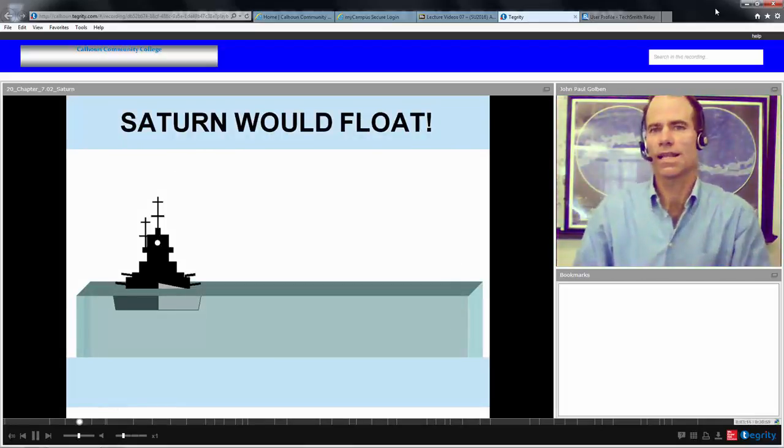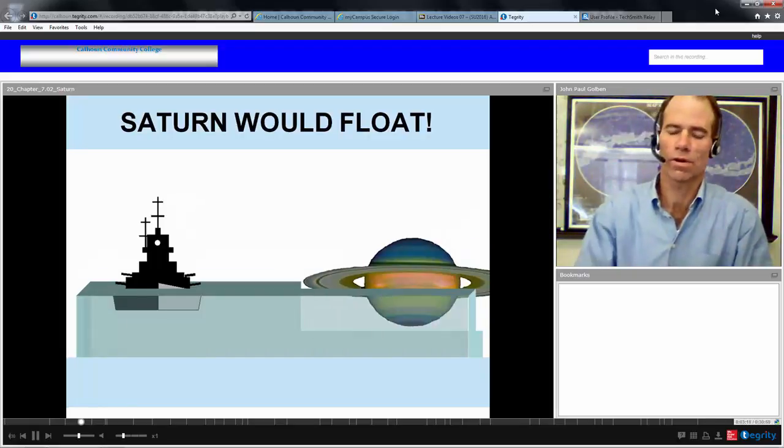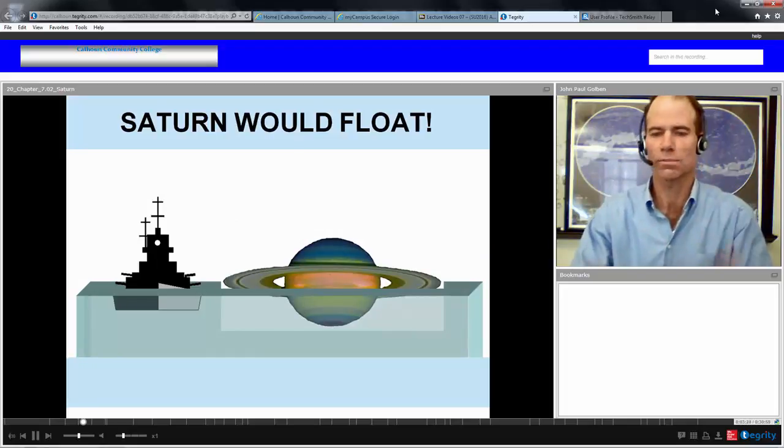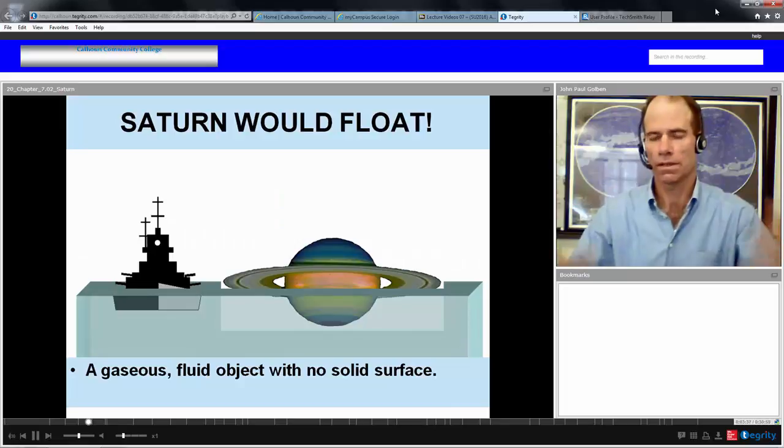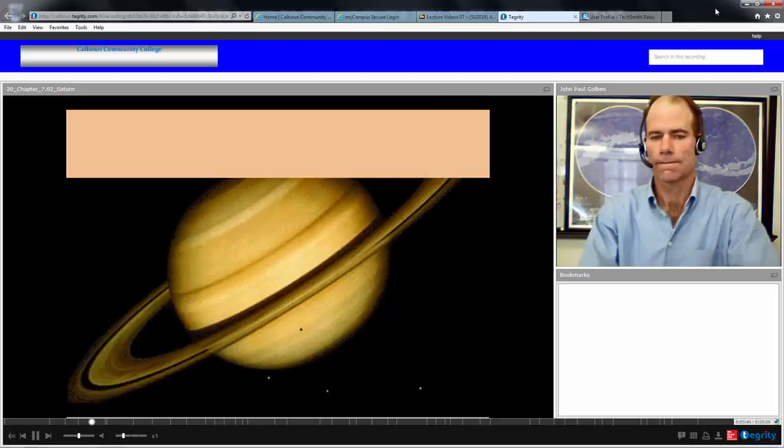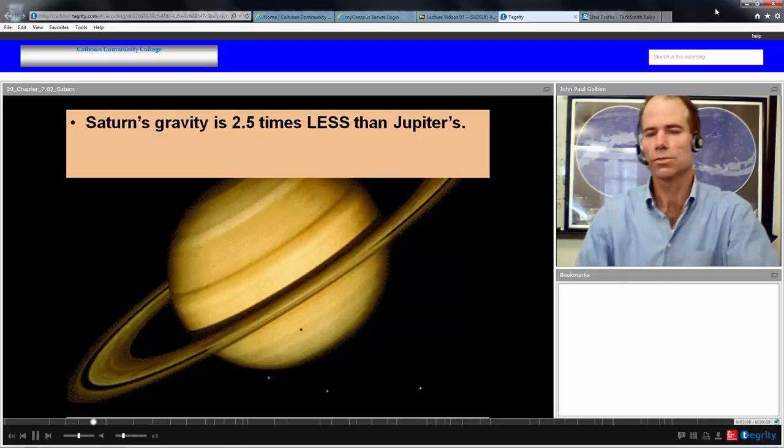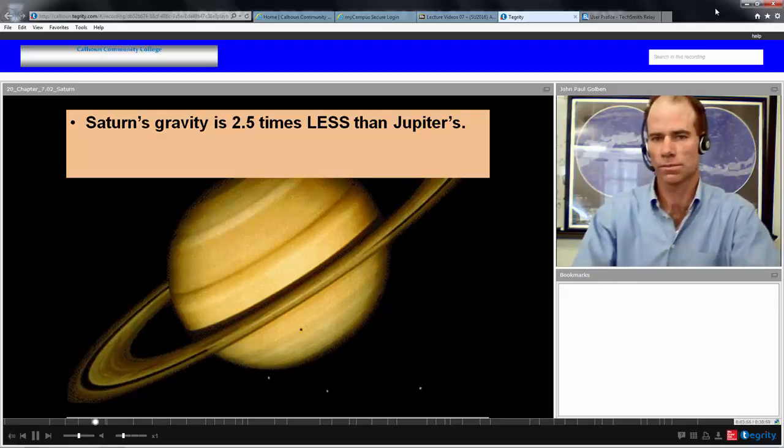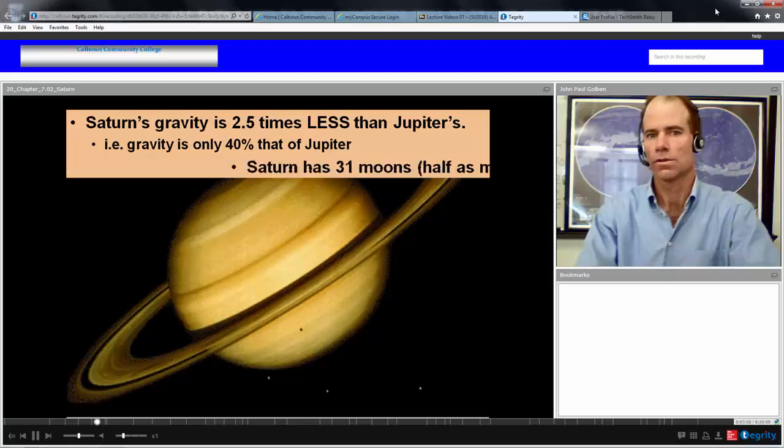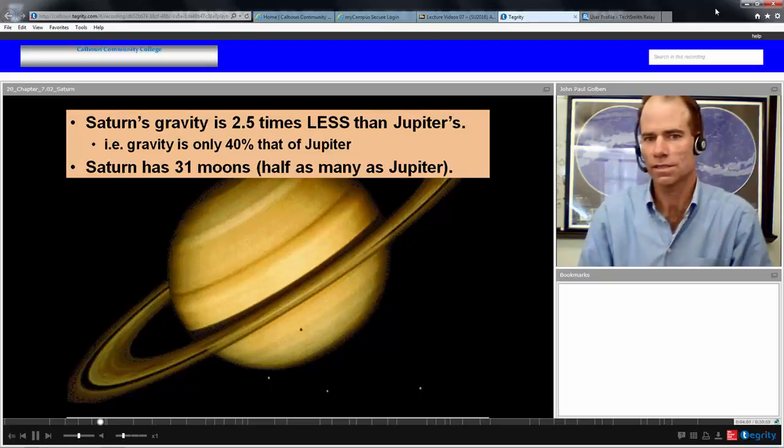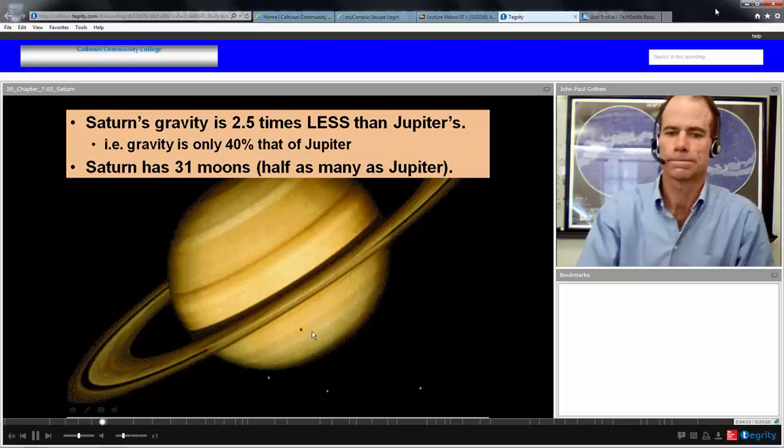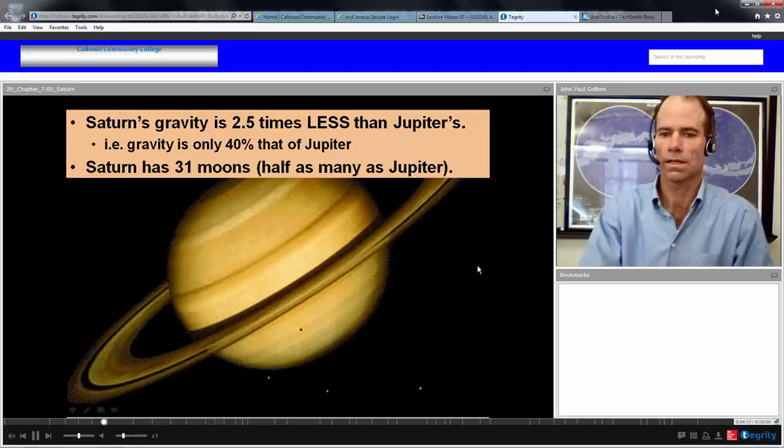Saturn is the only planet less dense than water. If Saturn were a huge beach ball, it would actually float on water. It's a gaseous fluid object with no solid surface. It does have a rocky core, but before you get there it's purely gas and ice layers. Saturn's gravity is 2.5 times less than Jupiter, similar to our gravity. It's only 40% that of Jupiter. Saturn has at least 31 moons, some accountings have as many as 48. In this picture you can see four of them near the equator.